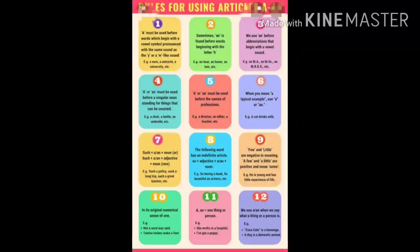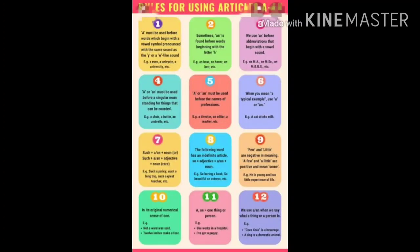Second point: sometimes AN is found before words beginning with the letter H. For example: an heir, an honor, an air, etc. Third point: we use AN before abbreviations that begin with a vowel sound. Example: an MA, an MSc, an MBBS.